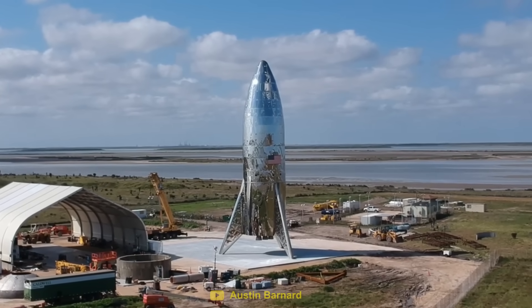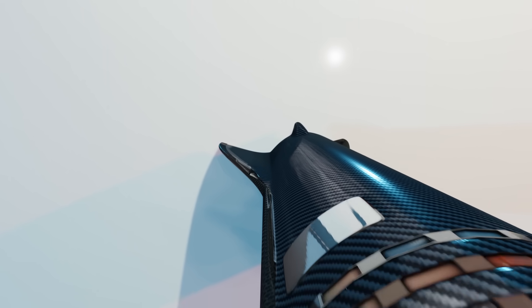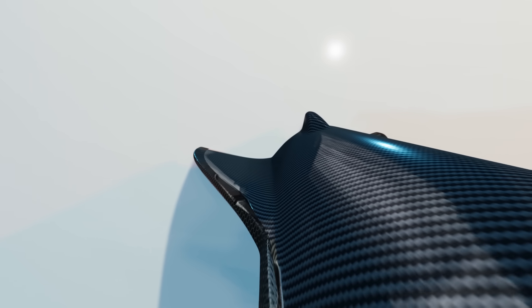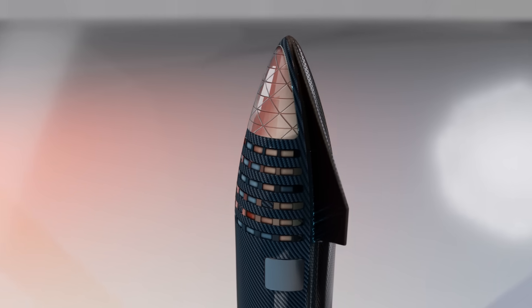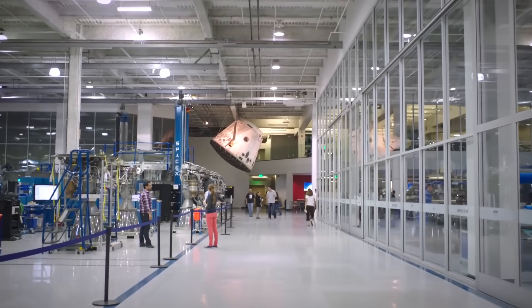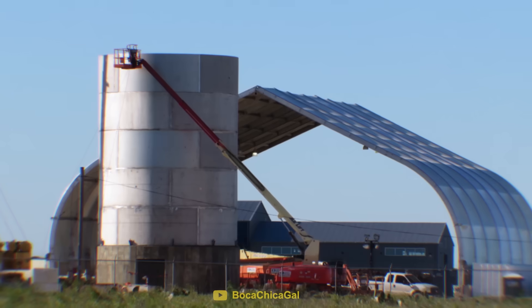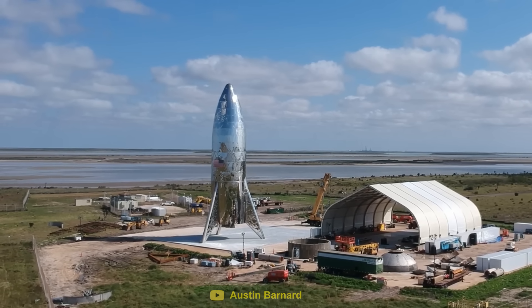Starship wasn't always destined to look like a 1940s sci-fi rocket. In fact, it was originally meant to be made from carbon fiber, and production had already begun in California. This seemed like the most logical plan since carbon fiber is extremely strong, and SpaceX already had most of their workforce based in California. So it shocked everyone when a stainless steel Starship popped up in a small village in Texas.